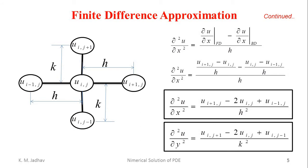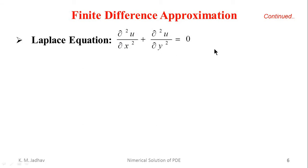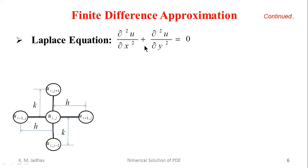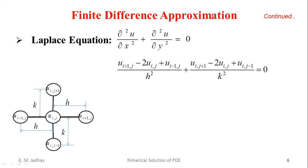Based on this finite difference approximation, we write formulas for different types of partial differential equations. Let us take the Laplace equation, ∂²u/∂x² + ∂²u/∂y² = 0. Substituting the discretized forms, we get (u[i+1,j] − 2u[i,j] + u[i-1,j]) / h² + (u[i,j+1] − 2u[i,j] + u[i,j-1]) / k² = 0.